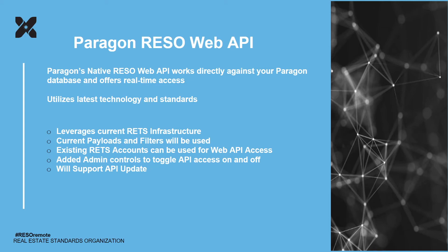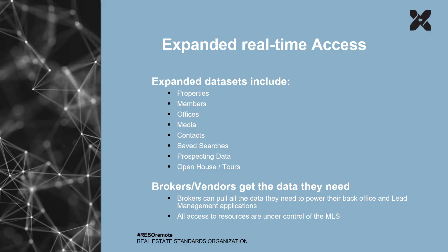Paragon's native RESO Web API — right now the resources supported by OpenMLS consist of properties, members, offices, media, contacts, safe searches, and prospecting data. In that resource you'll be able to get things like favorites, possible rejected, and any communication and comments you've had back and forth with your buyers and sellers. We currently also support open house and tours. In the last few weeks, due to the current situation, we've also added the capability to add live stream events to those resources as well.